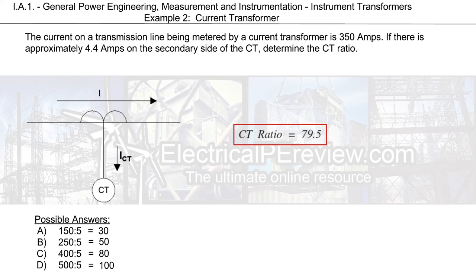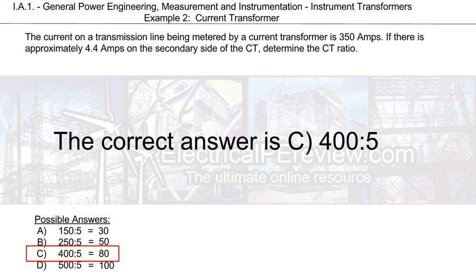Our most likely answer is going to be C. A CT ratio of 400 to 5 gives us a ratio of 80, which most nearly matches our found CT ratio of 79.5. The correct answer is C.